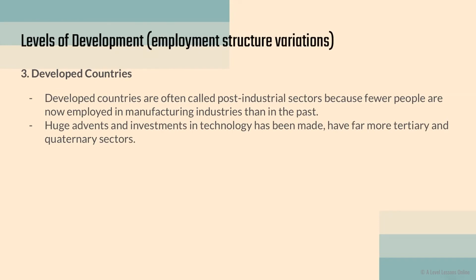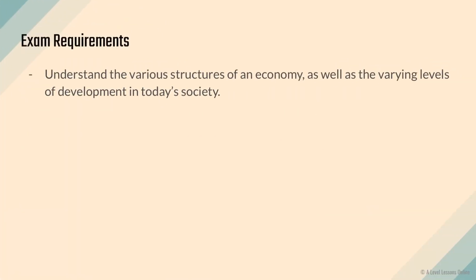Developed countries are often called post-industrial economies because few people are now employed in manufacturing compared to the past. Most people are employed in tertiary and quaternary sectors. There have been huge investments in technology, and you notice far more people working in offices, shopping malls, and entertainment industries. These countries have clearly moved on from basic primary and secondary sectors — although some secondary sector activity still exists — with the majority of their economic structure in tertiary and quaternary sectors.